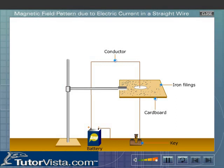What do you observe? The iron filings arranged themselves in concentric circles around the conductor. This is because the electric current produces a magnetic field around the conductor, and the iron filings, being magnetic in nature, align themselves in concentric circles.